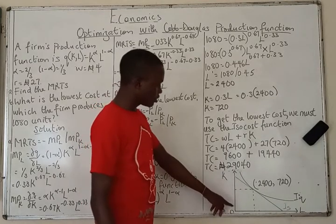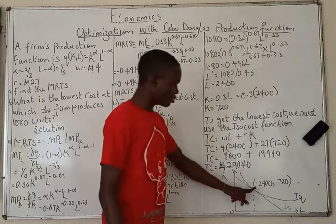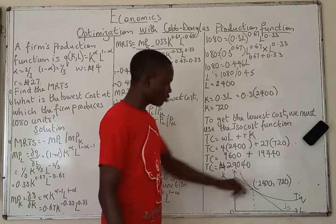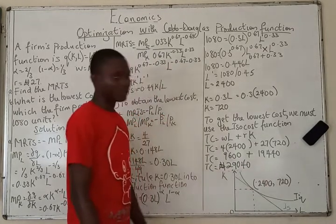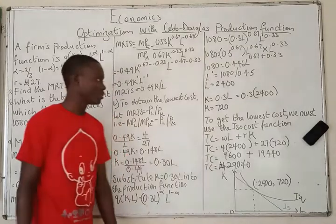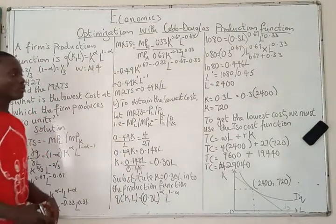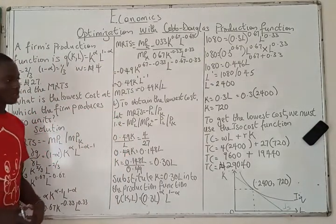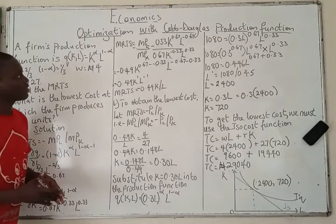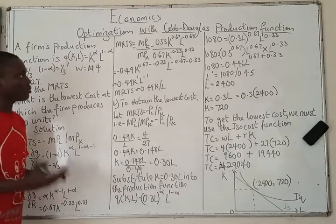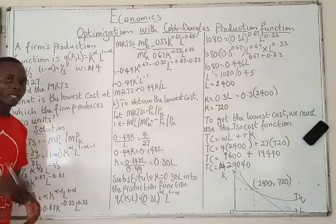That is where we have labor = 2,400 and capital = 720. So that's it for this class. If you have any questions, leave them in the comment section, like this video, and please share and subscribe to our channel. We shall be talking about a more complex Cobb-Douglas production function in the following video.